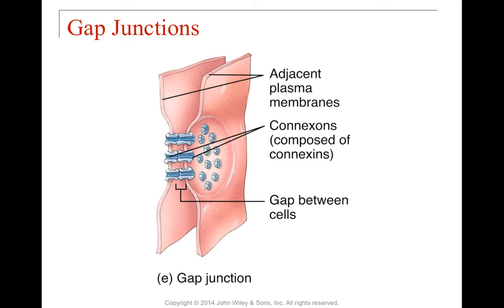Gap junctions are going to be similar in shape to hemidesmosomes and desmosomes — they look kind of like a snap, a little circle. But they actually allow for passage of information. So relay and communication is allowed through gap junctions — kind of like the equivalent of a tin can on a string connected to your neighbor. They are connected by connexons, made of the protein connexin, forming long porous channels that allow information to pass from one cell to the next directly without going into the extracellular space.